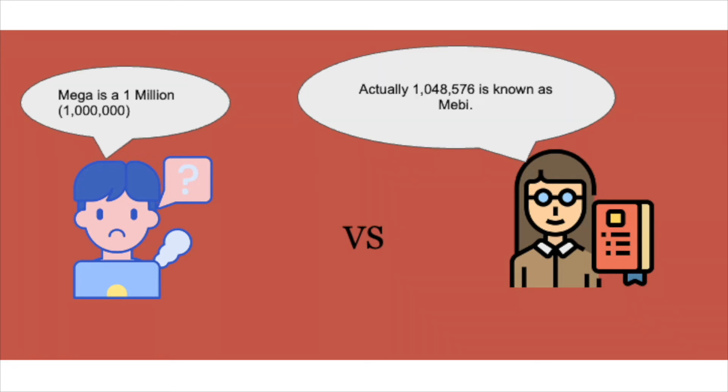So our amateur goes, well I still think mega is 1 million bytes, and the expert then goes, well actually it's 1,048,576 bytes, which is also known as a mebi byte, so they're slightly different. Even though for small amounts it's not a big difference, when you create all these megabytes into bigger numbers it can add up to a sizable sum.